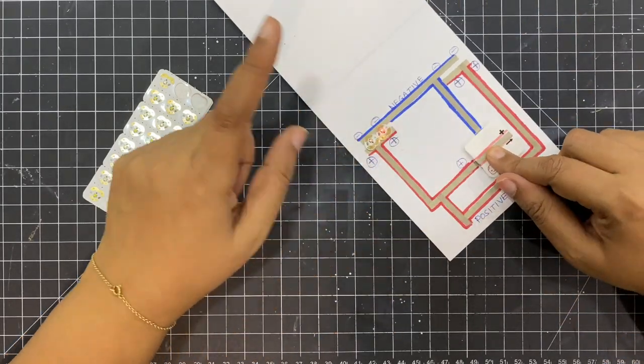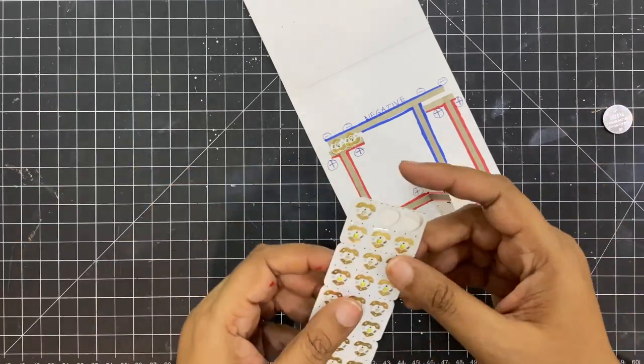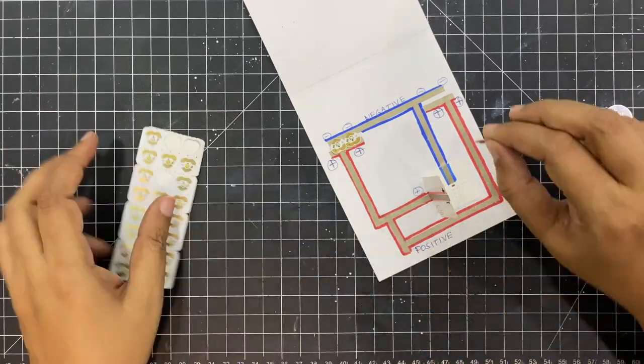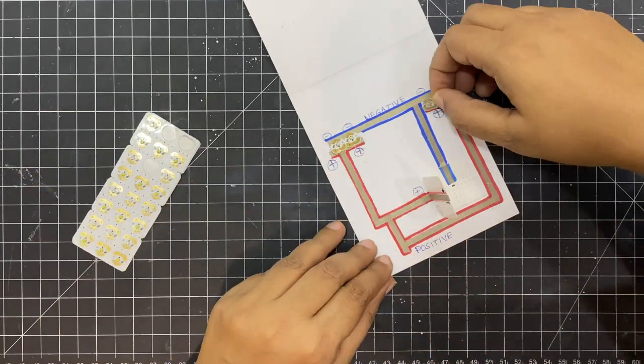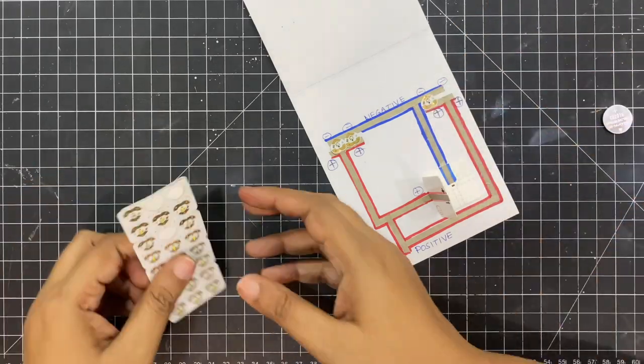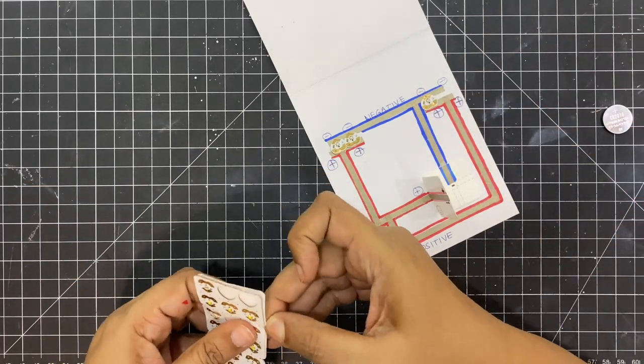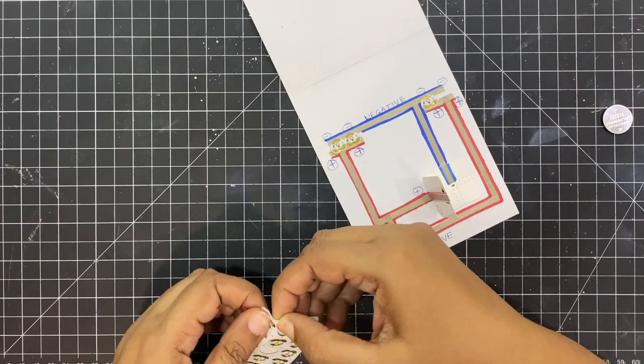In between, I keep checking by placing my battery in the battery holder that the lights are working properly and the circuit is good. It's a good idea to check before you really stick everything properly.